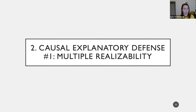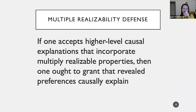The causal explanatory defense rests on multiple realizability, and it's a conditional defense. If one accepts higher-level causal explanations that incorporate multiply realizable properties, then one ought to grant that revealed preferences causally explain. One might be skeptical of higher-level causal explanations, but if you're willing to grant that premise — which is at least commonly defended in the philosophy of social science — then I argue you ought to grant that revealed preferences can causally explain. I'll argue this using Schelling's spatial proximity model plus points about multiple realizability from the philosophy of social science.